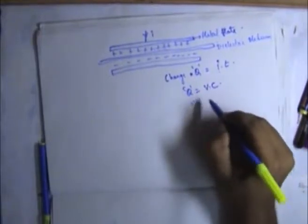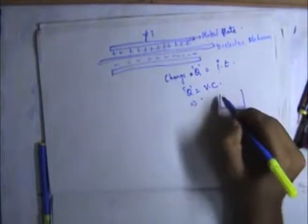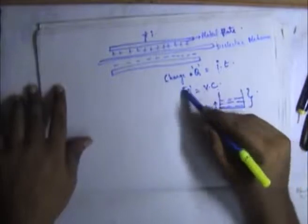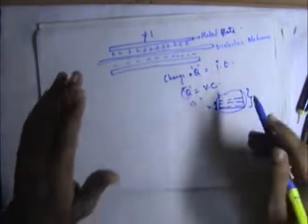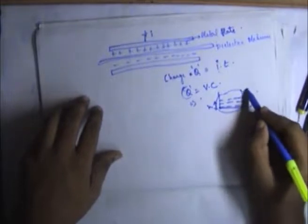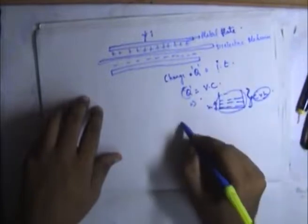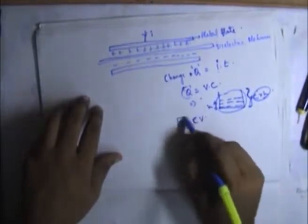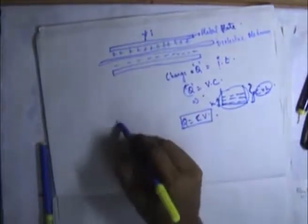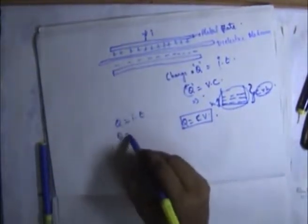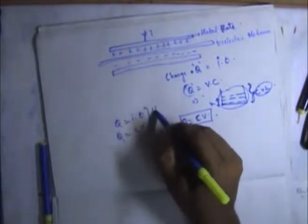Whenever you take a capacitor, the capacitance is the total volume it can hold, and V or the potential is the height. So Q, the total charge, equals C times V. The equations Q equals I times T and Q equals C times V are used in stable operating mode.